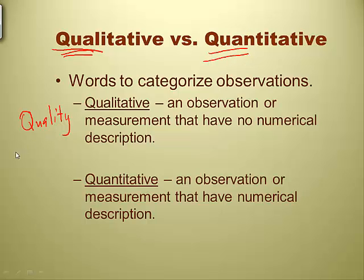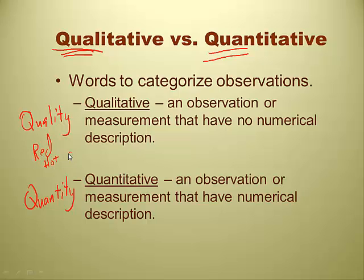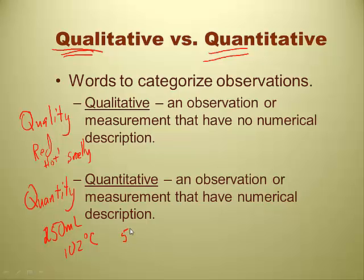And quantitative — think of quantity. Quantities are things that have numerical values. Red, hot, or smelly are all qualities, but quantities are things like 250 milliliters, 102 degrees Celsius, or five foot eight inches tall.